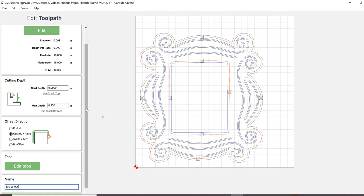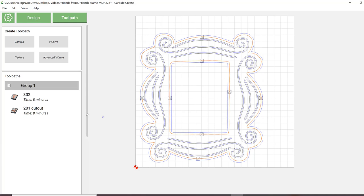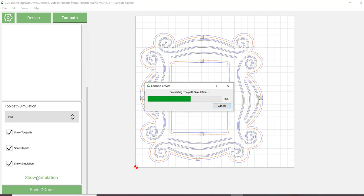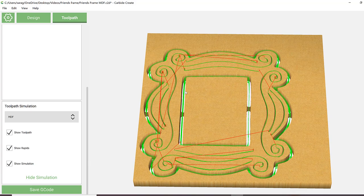I'm using the toolpath simulation to check that I've set the appropriate material depth, tabs, and design. Since Shapeoko's bit setter is a newish accessory that not everyone has, I've decided to save the two different tools into separate G codes.